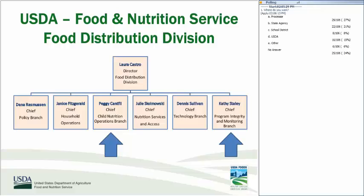First, since we know where you are from, we would like to introduce the Branch staff presenting today and explain where we're located in the Food Distribution Division. The Food Distribution Division is located at USDA Headquarters and is organized into six branches. Child Nutrition Operations Branch manages food orders, raw material supplies, the National Processors Monthly Performance Report, and reconciliation of sales orders and inventory reports.